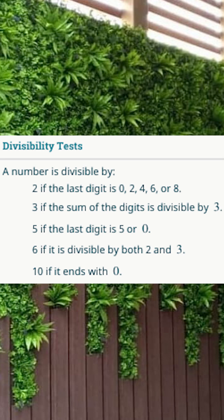First, for 2: if the last digit is 0, 2, 4, 6, or 8, that number is divisible by 2. For 3: if the sum of the digits is divisible by 3, that number is divisible by 3. For 5: if the last digit is 5 or 0, it's divisible by 5. For 6: if it's divisible by both 2 and 3, it's divisible by 6. For 10: if it ends with 0, it's divisible by 10.